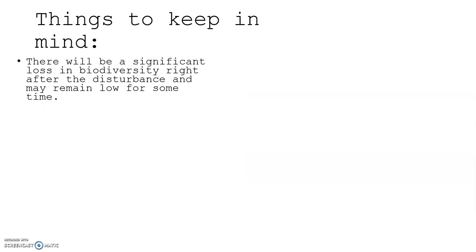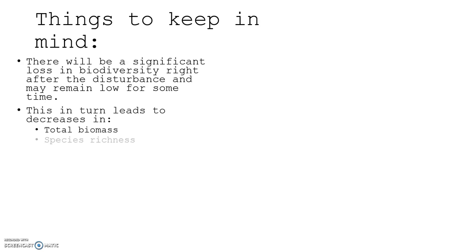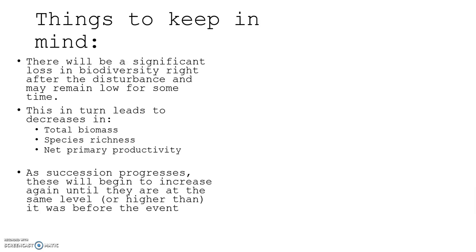Things to keep in mind: there will be a significant loss in biodiversity right after the disturbance, and it may remain low for some time. This leads to a decrease in total biomass — how much green material is present — as well as species richness, meaning how many different types of species are present, and net primary productivity, meaning how much energy is being harnessed from the sun. As succession progresses, these will begin to increase again until they are at the same level or higher than before the event.